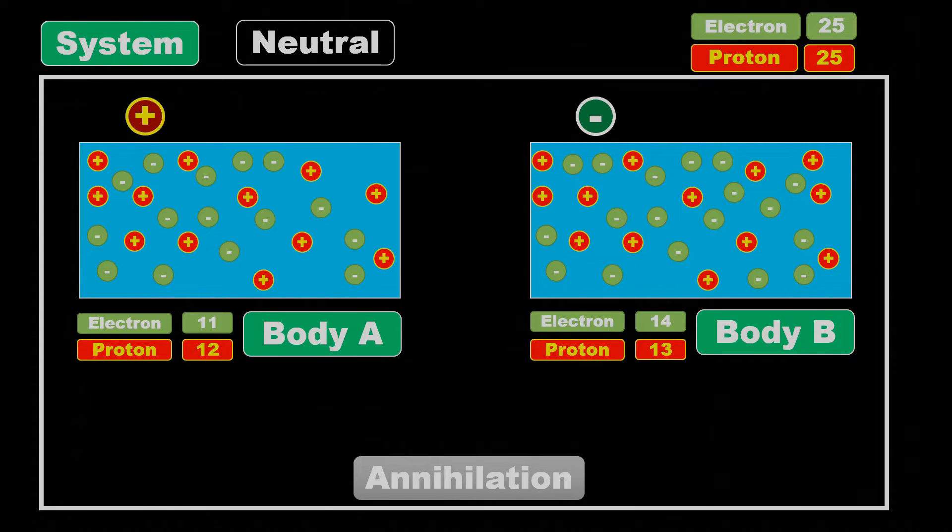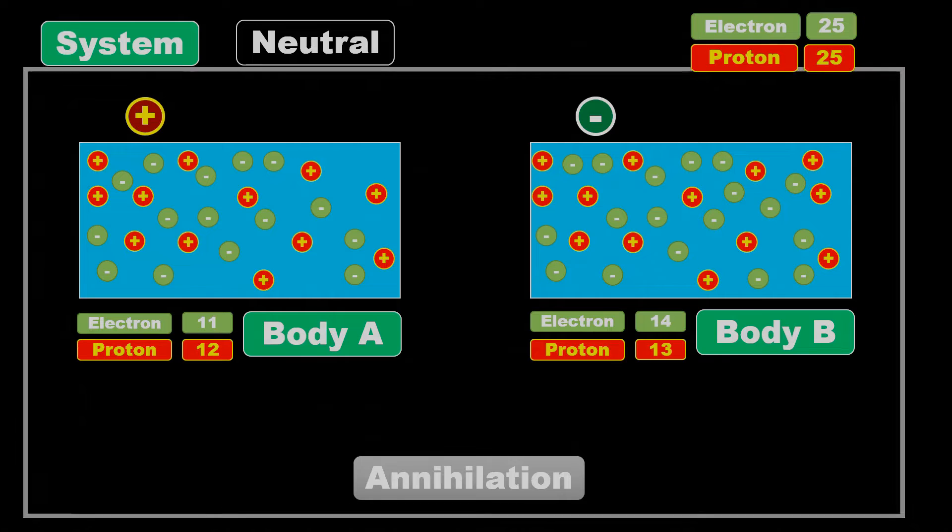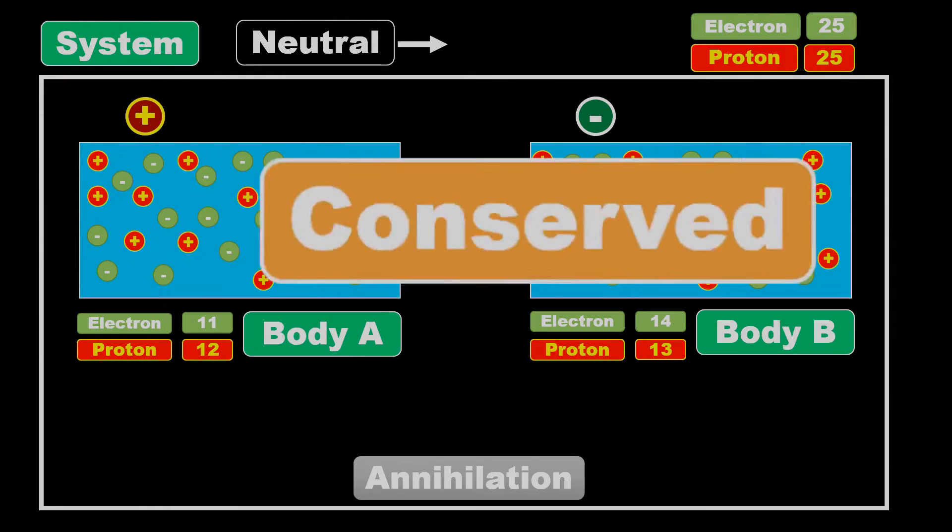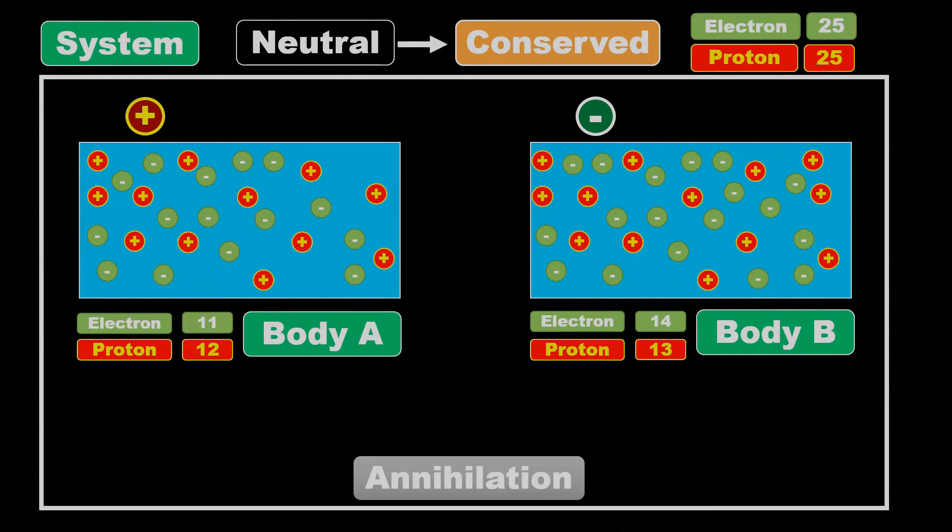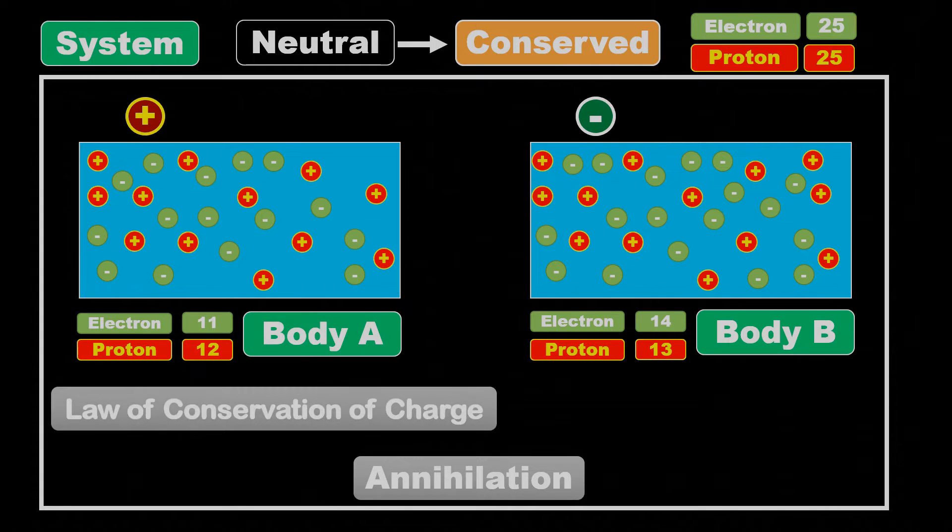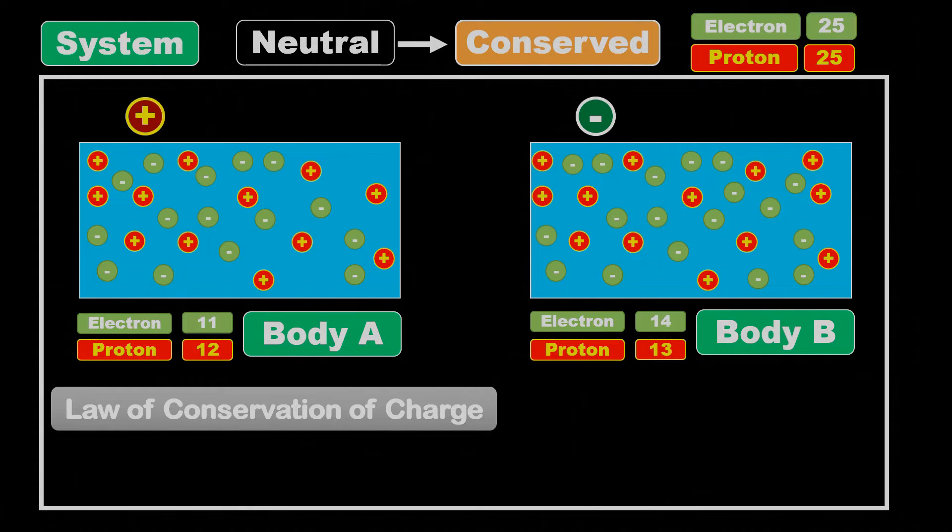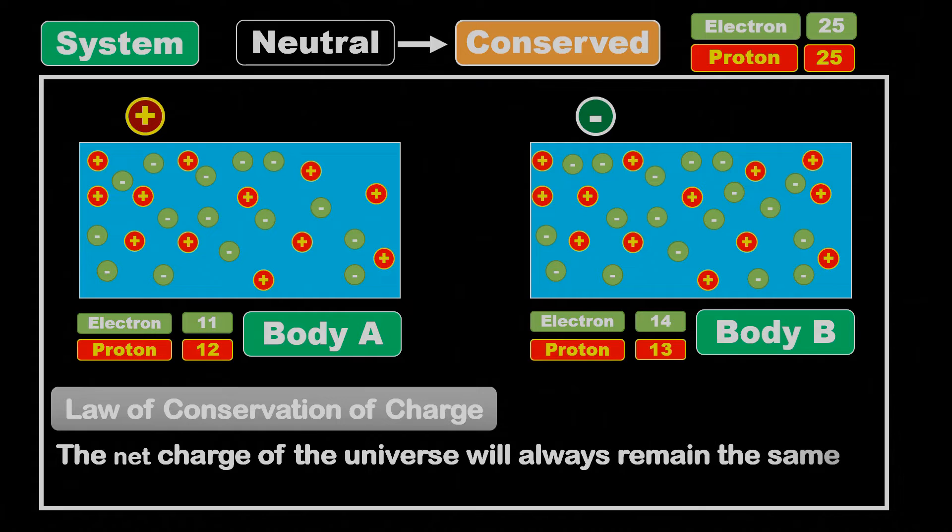Therefore, we can say that the net charge of our isolated system will always be conserved. And from this, we get the law of conservation of charge, which states that while charged particles can be created and destroyed by nature, the net charge of the universe will always remain the same.